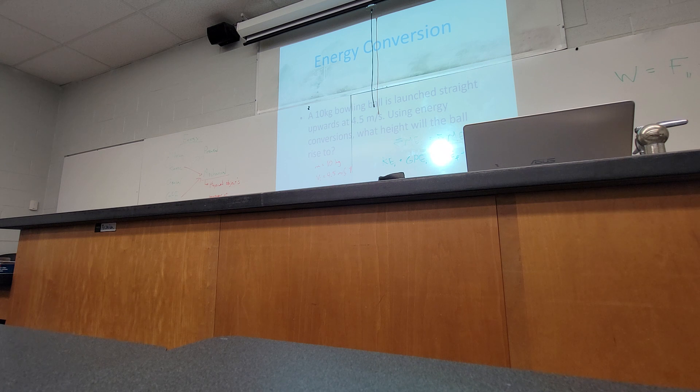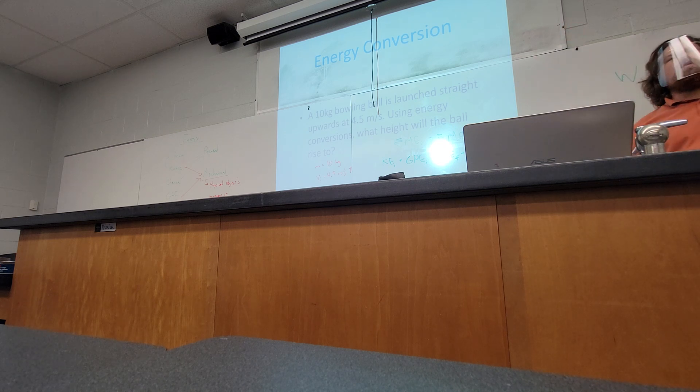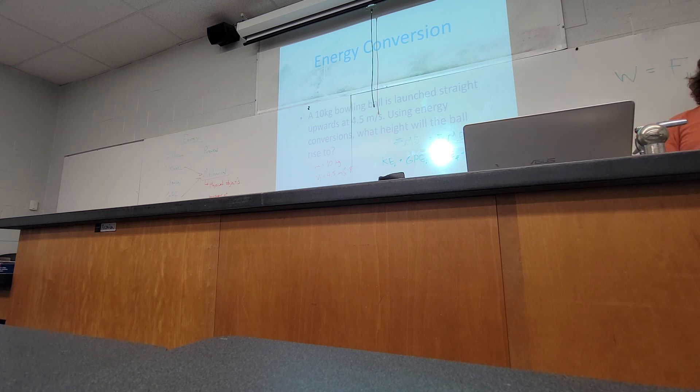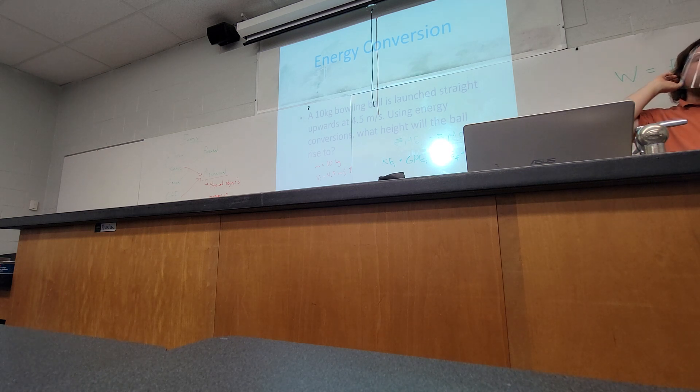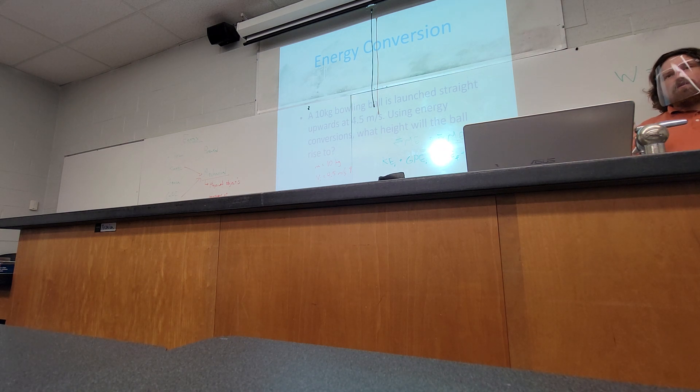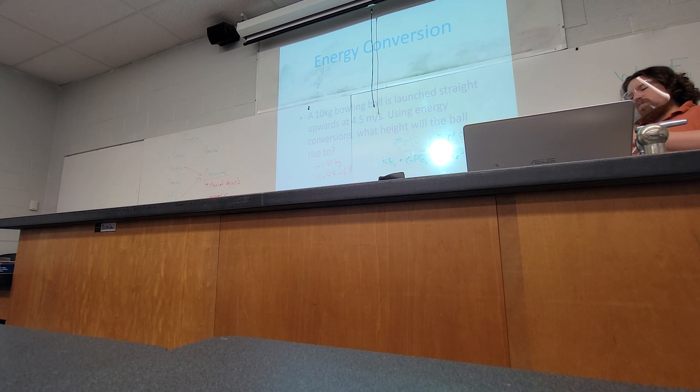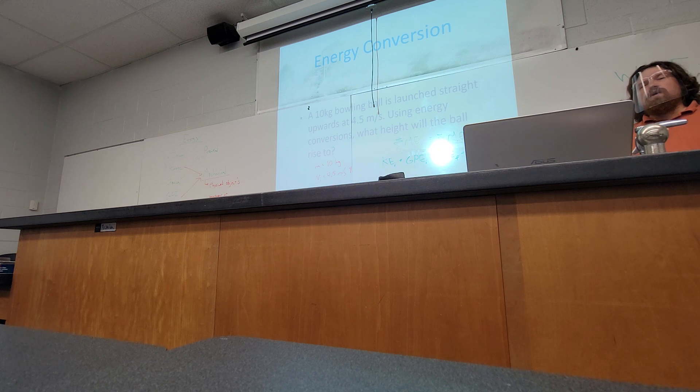Before we do that though, just a concept question. If you throw an object straight upwards, the second it leaves your hand, what is the primary form of energy that object would have as soon as it leaves your hand? A little louder. I heard someone say it. Kinetic. Kinetic. If it leaves your hand, it is moving. You threw it with a velocity, it's going to have kinetic energy. And if we consider the height of our hand to be zero, it wouldn't have any GPE compared to your hand.